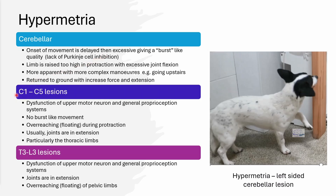By comparison, hypermetria seen in upper cervical lesions results from dysfunction of or interruption to the upper motor neuron and the general proprioceptive systems. You don't get that burst-like movement because this isn't a reflection of lack of Purkinje cell inhibition. Instead, they have a kind of overreaching, floating limb gait — extending further forward and taking longer during protraction. The joints are typically in extension, not flexion, and you particularly notice it in the thoracic limbs, though with a high cervical lesion it also appears in the pelvic limbs.